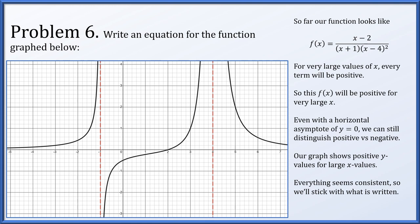Everything looks alright as written, so we can leave it like this. The y-intercept appears to be around -1/2, but it's not explicitly labeled. If it were a labeled point, you could match it by multiplying by the appropriate constant.